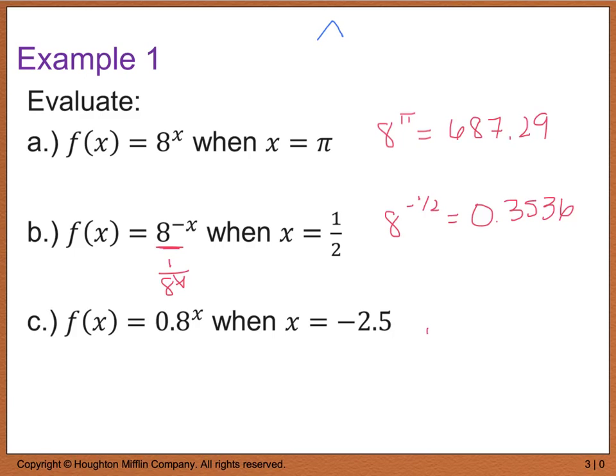Then for part C, we have 0.8 raised to the negative 2.5. And this is going to give me 1.747. And again, I did all of these values in my calculator.